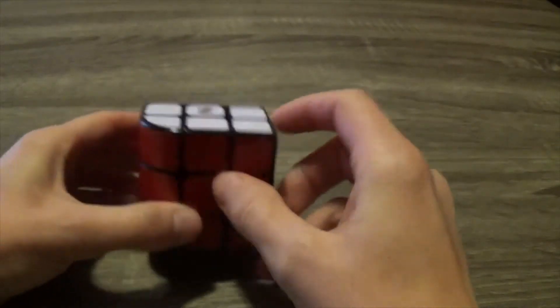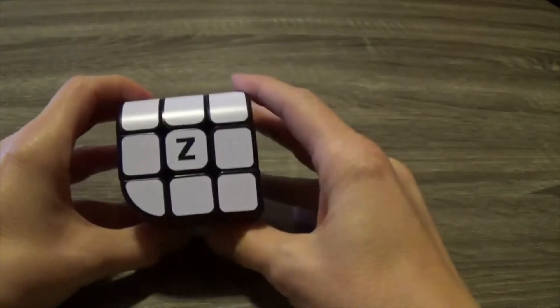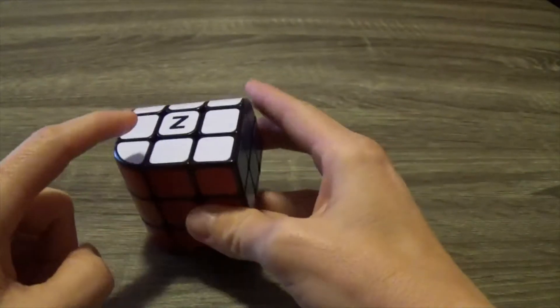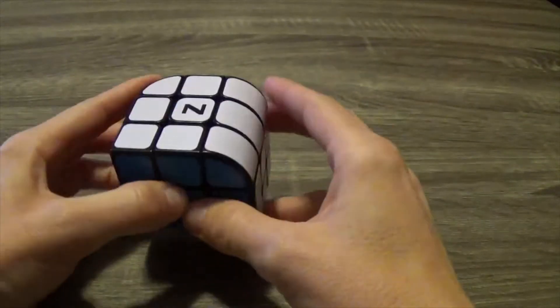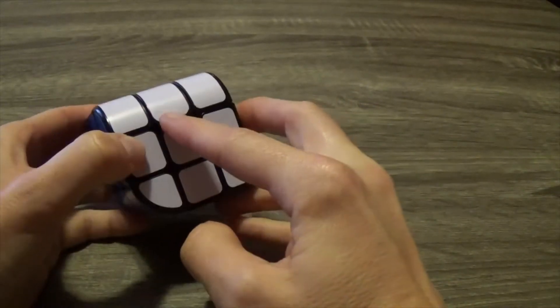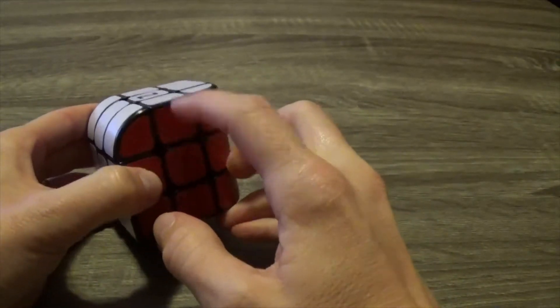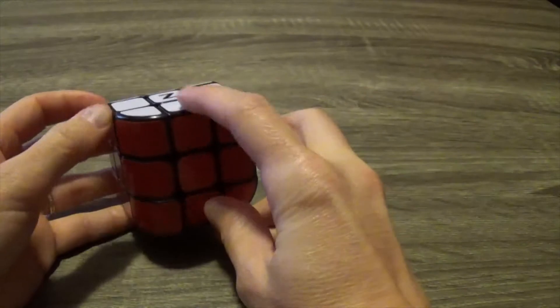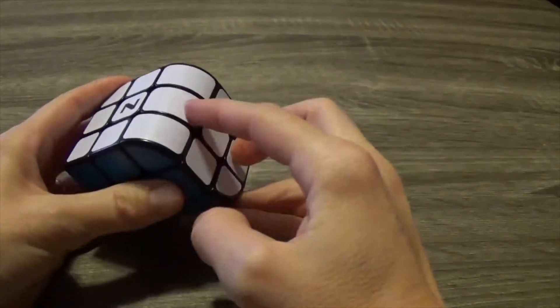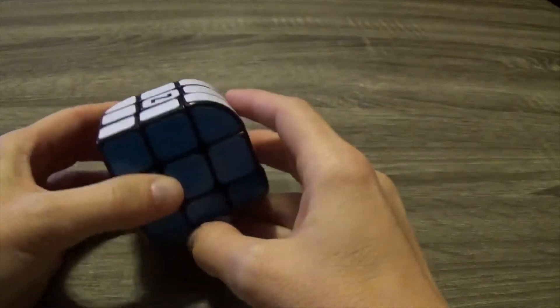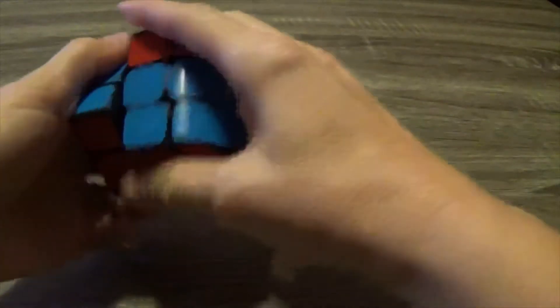Before we start, I want to look right here. We're going to solve the white first up here. If you look, we have a red and white, a blue and white, this white curved piece, and another red and white. So we need two reds, a blue, and this white curved when we go to do what would be our Daisy.